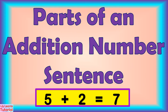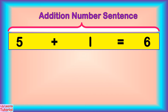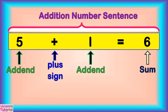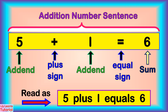Let's look at the parts of an addition number sentence. This is an addition number sentence. Five and one are the add-ins. Six is the sum. This is a plus sign, and this is an equal sign. You can read this as five plus one equals six.